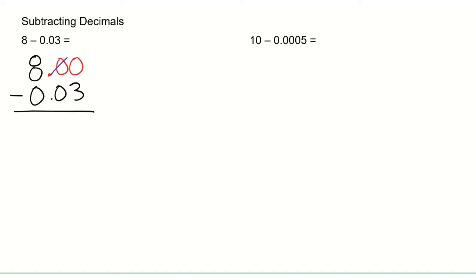But we have another 0. Zeros don't have any values, so we need to keep borrowing until we get to the next whole number — the next number that has any value. The 8 has some value, so I'm going to reduce the 8 to a 7, carry that 1 over to the 0 to make that a 10. Then I borrow from that 10, make that a 9, and bring that 1 over to make that final 0 a 10. Now: 10 minus 3 is 7, 9 minus 0 is 9. Bring down the decimal. 7 minus 0 is 7. Make sure all of your decimals are in alignment when doing adding and subtracting.